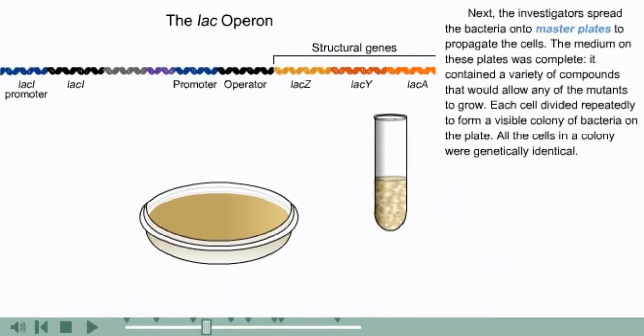Next, the investigators spread the bacteria onto master plates to propagate the cells. The medium on these plates was complete. It contained a variety of compounds that would allow any of the mutants to grow. Each cell divided repeatedly to form a visible colony of bacteria on the plate. All the cells in a colony were genetically identical.